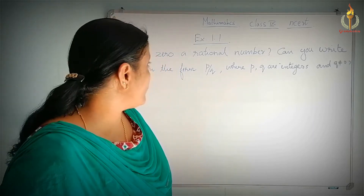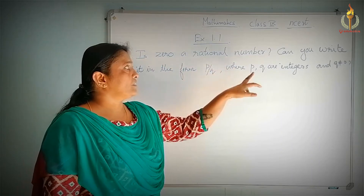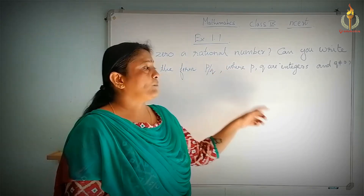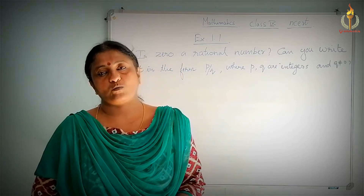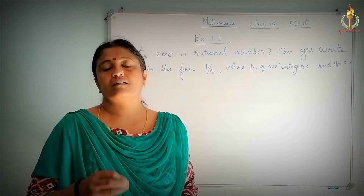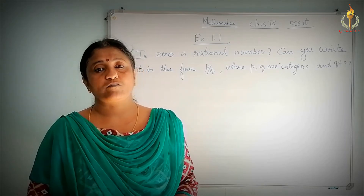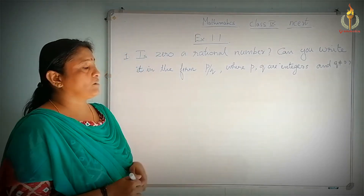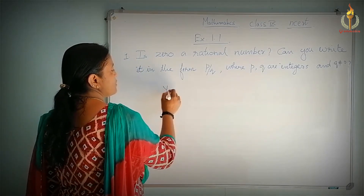The first question is: Is 0 a rational number? Can you write it in the form P by Q, where P and Q are integers and Q not equal to 0? In short, we need to say whether 0 is a rational number or not. So, is 0 a rational number? Yes. The answer for the first question is yes.